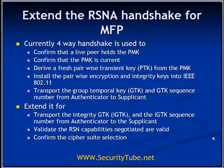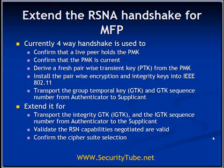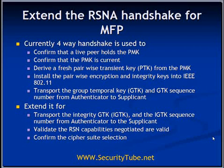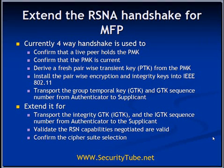Now, how exactly will the RSNA handshake be carried out in 11w? Currently, this 4-way handshake confirms the following things to each party. First, everyone gets confirmation that the other party is holding the PMK or pairwise master key. Second, each party gets confirmation that the PMK held by the other party is live and fresh. With the help of PMK, either party derives the pairwise transient key or PTK. They also install encryption and integrity keys into the IEEE 802.11 state machines. One more important thing carried out in this 4-way handshake is the group temporal key and group temporal key sequence number derivation, which is delivered by the authenticator to the supplicant.